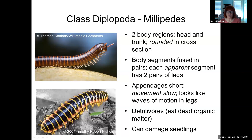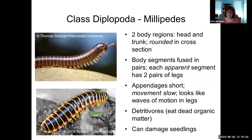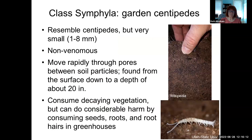Millipedes are round in cross-section. They look similar to centipedes, except they move very slowly — they're kind of like the cattle of the arthropod world, just wandering around eating things. They appear to have two pairs of legs per segment, but developmentally the segments fuse, so they really have one pair per segment. Their appendages are relatively short for the body size. They normally eat dead organic material, but they can damage your seedlings if there are too many of them and they don't have enough to eat.